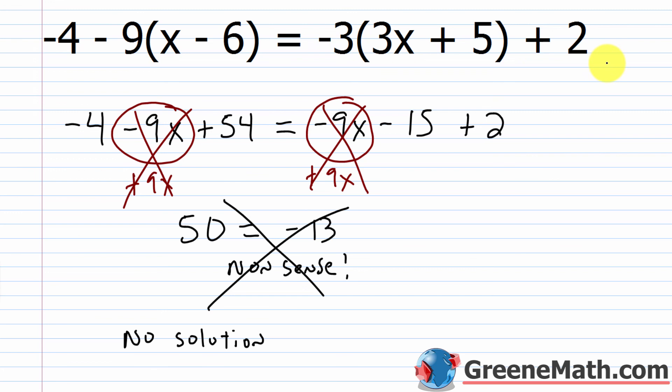You're going to get these on a test, usually at the end of the section on linear equations in one variable. Your teacher will throw this at you and you'll wonder why the variable is gone. Just remember: if the variable is gone and one side doesn't equal the other, there's no solution — it's a contradiction.